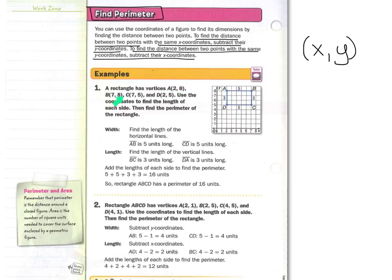B is 7, 8. C is 7, 5. And D is 2, 5. Use the coordinates to find the length of each side, then find the perimeter of the rectangle. In order to find the width, find the length of the horizontal lines — so AB and DC are the horizontal lines.